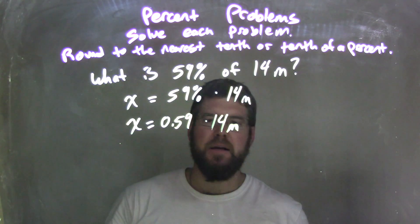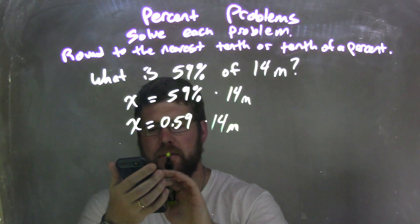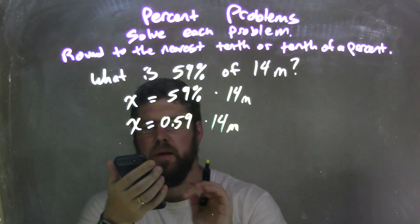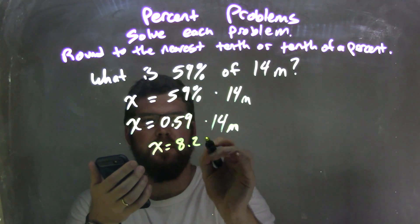We'll use our calculator here. We multiply 0.59 times 14, which gives me x equals 8.26 meters.